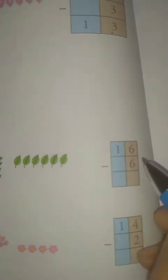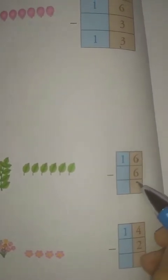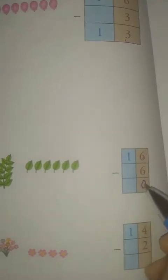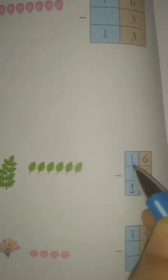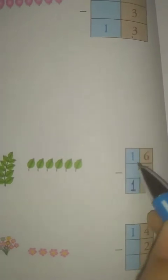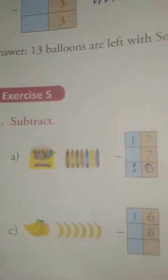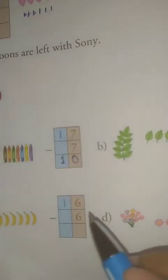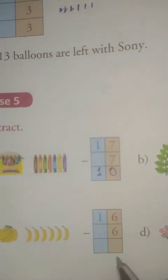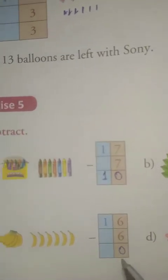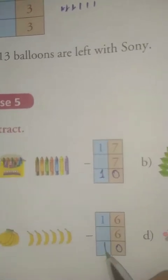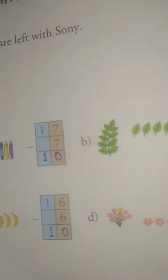Number B: 16 minus 6. So 6 minus 6 is equal to 0, and 1 minus 0 is equal to 1. No number is there so 1 will come down. So 16 minus 6 is equal to 10. Number C: 16 minus 6 — here also the same: 6 minus 6 is equal to 0 and 1 will come down. So 16 minus 6 is equal to 10.